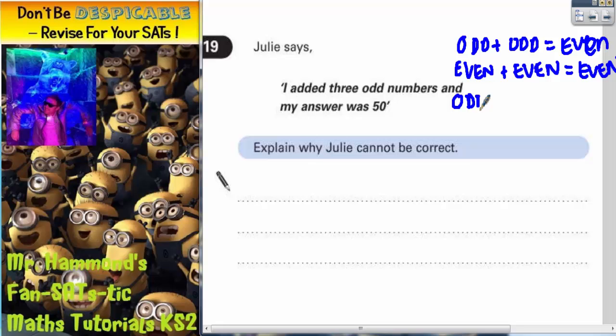So when you have an odd number and you add an even number, whichever way round you do it, you get an odd answer. You could do it the other way around: even plus odd will give you odd.